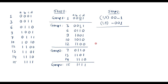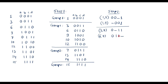Now comparing Group 2 with Group 3. Comparing 3 and 7 (0111) — they differ by one bit (second bit), so 3,7 is written as 0-11. Comparing 6 and 7 — they differ only in the fourth bit, so 6,7 is written as 011-. Comparing 6 and 13 — differs by more than one bit, ignore. Comparing 6 and 14 (1110) — they differ only in the MSB, so 6,14 is written as -110.